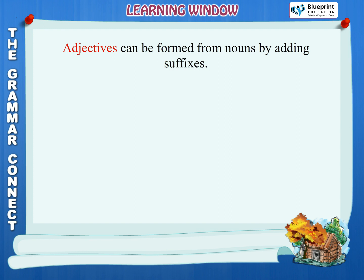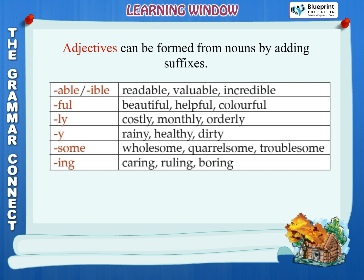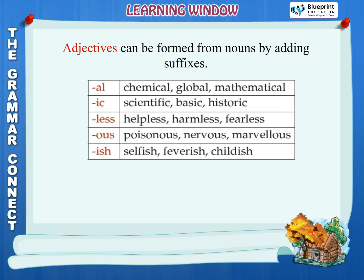Formation of adjectives. Adjectives can be formed from nouns by adding suffixes: -able/-ible (readable, valuable, incredible); -ful (beautiful, helpful, colorful); -ly (costly, monthly, orderly); -y (rainy, healthy, dirty); -some (wholesome, quarrelsome, troublesome); -ing (caring, ruling, boring); -al (chemical, global, mathematical); -ic (scientific, basic, historic); -less (helpless, harmless, fearless); -ous (poisonous, nervous, marvellous); -ish (selfish, feverish, childish).